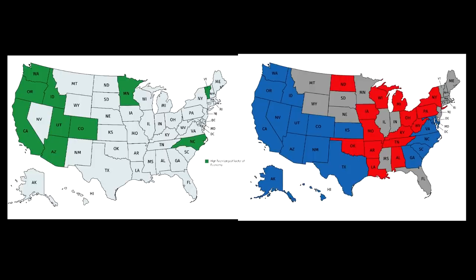Georgia, Texas, New Mexico, and Nevada are states where high-tech is the second largest part of the economy and is gaining ground on whatever the leading sector is. For Georgia it's agriculture, for Texas and New Mexico it's energy, and for Nevada it's tourism. By the way things are going, by 2030 I expect Georgia, Texas, and New Mexico to be states where high-tech is the largest part of the economy. Nevada has a long way to go — the economy there will still be based on you going there to lose money — but high-tech is becoming a larger part even there.